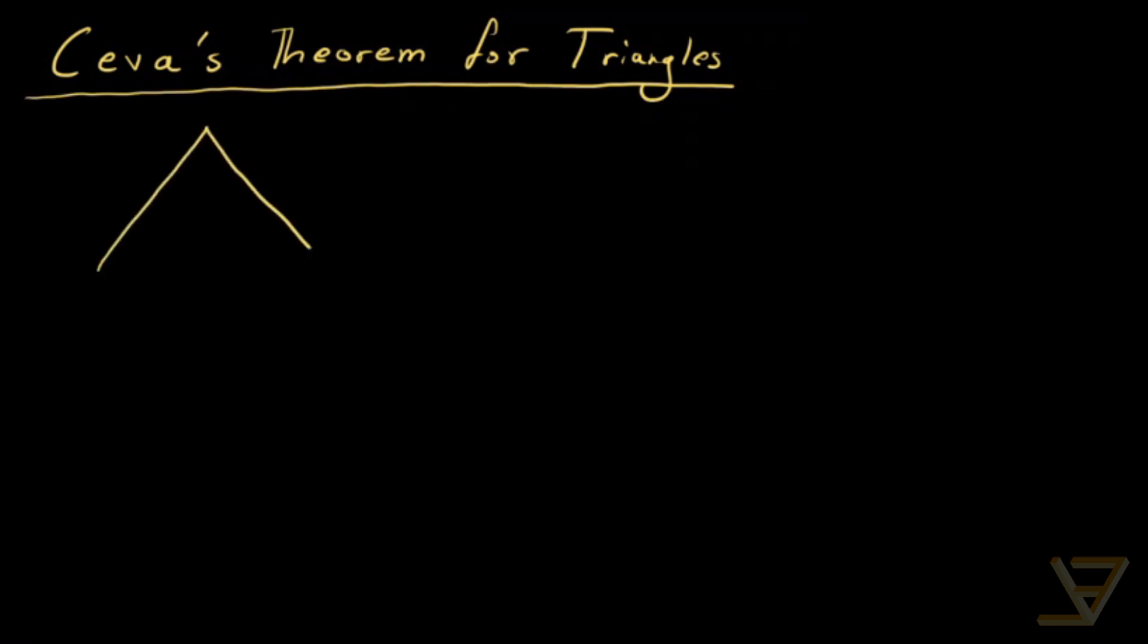So let's say we have a triangle that looks like this. Then a Cevian is a line segment that has one endpoint on a vertex and one endpoint on the opposite line segment of the triangle. And we then draw this pink line segment that you can see here. So this segment is called a Cevian.